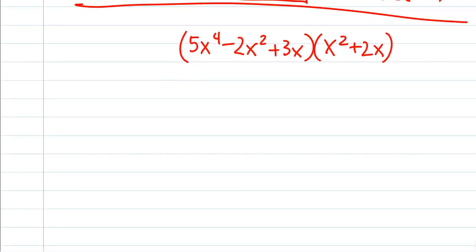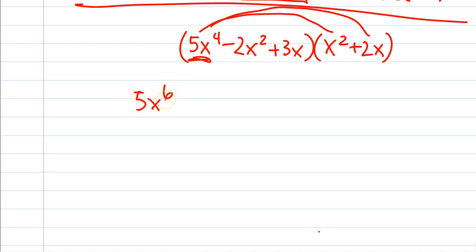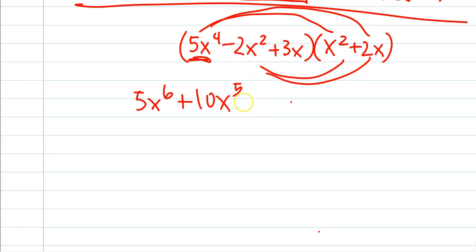Last one — can you distribute when it's scarier? The rules don't change. Take everything in the first group and multiply it across everything in the second group. Take the first term, 5x to the fourth, and distribute it: 5x to the fourth times x squared is 5x to the sixth; 5x to the fourth times 2x is 10x to the fifth. Then distribute negative 2x squared: negative 2x squared times x squared is negative 2x to the fourth; negative 2x squared times positive 2x is negative 4x to the third.